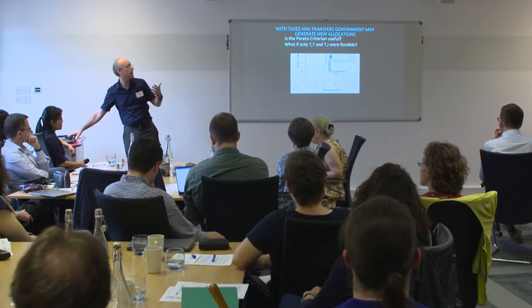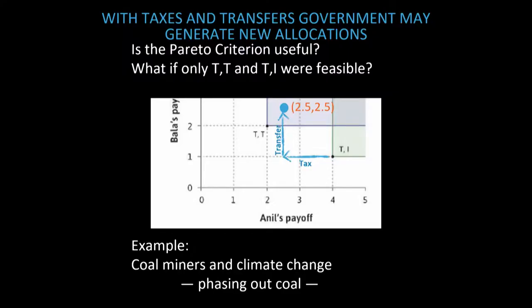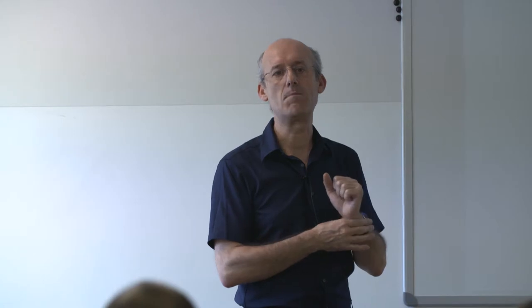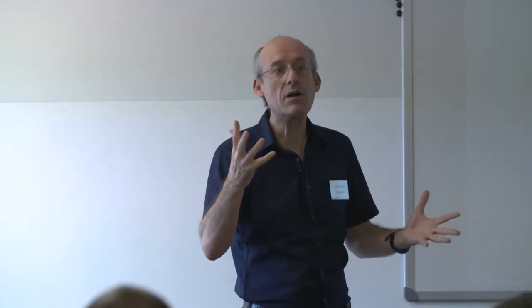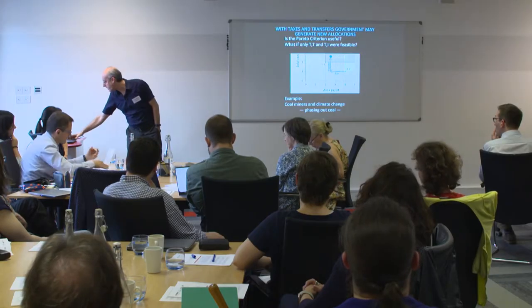The example in the book regarding tariffs relates to climate change — for instance, what happens with coal miners and the idea of phasing out coal. From the perspective of the pure Pareto criterion, it's impossible to compare a situation where coal miners are losing their jobs. However, if you think about tax and transfer, there are ways where they can all end up being better off.